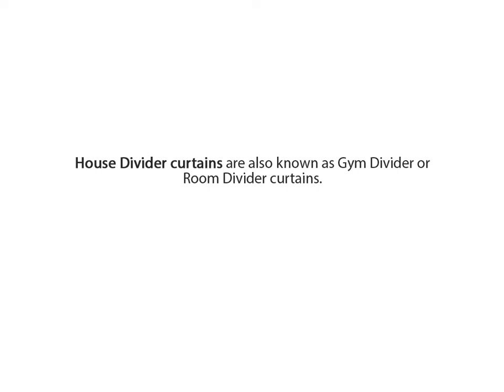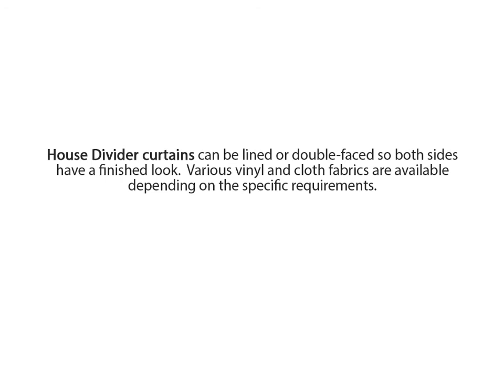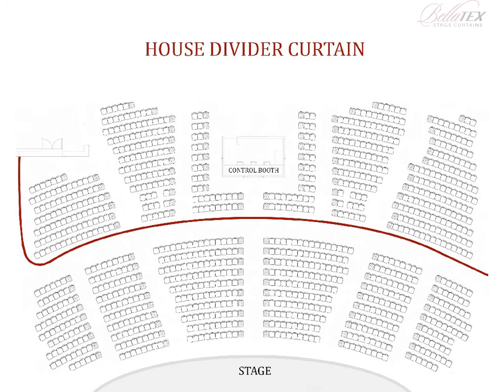Pipe and Drape are also known as gym divider or room divider curtains. A house divider curtain can be an economical way to split large spaces up for classes, meetings, or events. Divider curtains are often used in large churches to mask off unused areas of the sanctuary during smaller services. House divider curtains can be lined or double-faced so both sides have a finished look. Various vinyl and cloth fabrics are available depending on the specific requirements. In this picture, we see a plan view of a theater as seen from above. Notice the house divider curtain outlined in red, being used to mask off the back part of the theater from audience members.